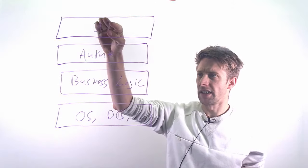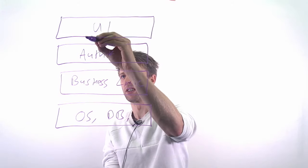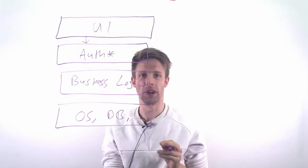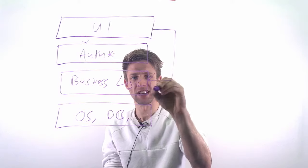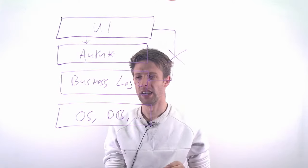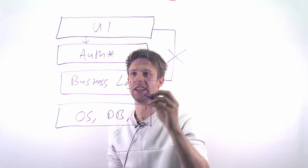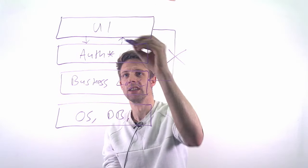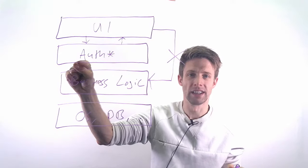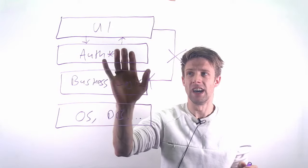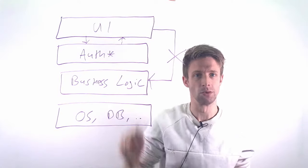The way layered architecture works is that the upper layers only ever talk to the layer right below them — you're not allowed to jump over. The lower layers never call up; they just reply. So if the UI sends an authentication request to the second layer, that layer answers it, but will never by itself call the UI to say please do something.